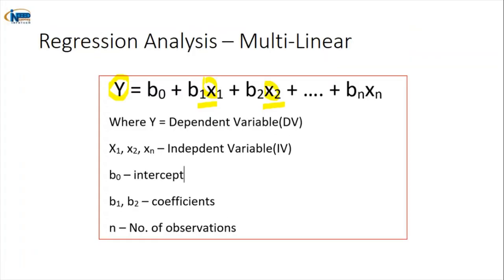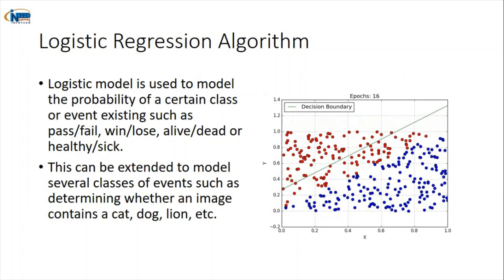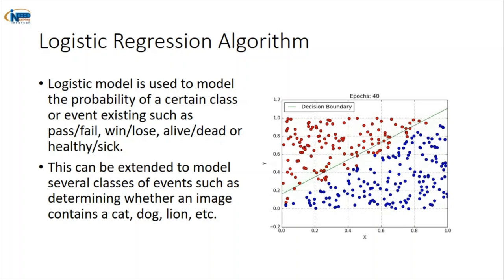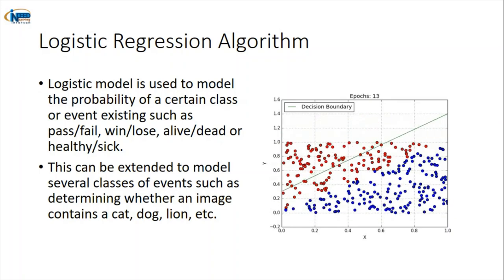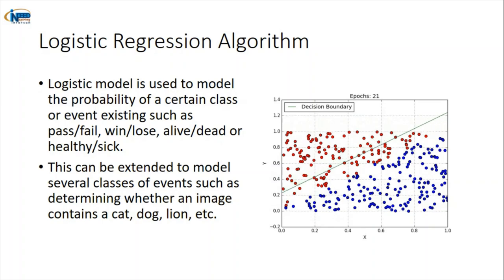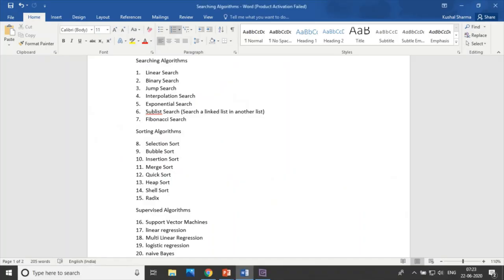The nineteenth algorithm is logistic regression, another type of regression. Logistic regression works on a probabilistic method — it tells you the possibility of a particular element being in the red category or the blue category. There will be only two outputs: yes or no, live or dead, win or lose, healthy or sick. This is logistic regression.